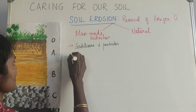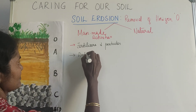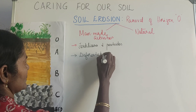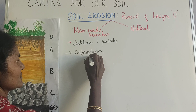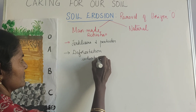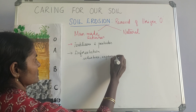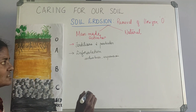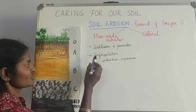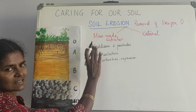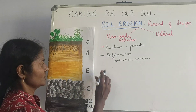The second reason is deforestation. Due to industries, expansion, housing, and expansion of cities, all these lead to deforestation, and when the forests are removed, automatically when there is rain or any other activity, the soil will be eroded immediately.